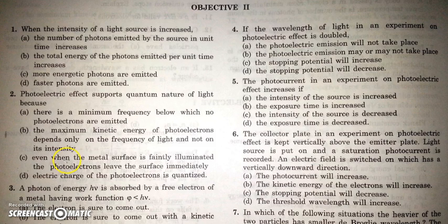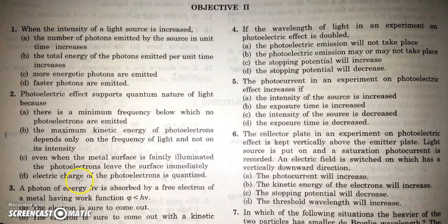The maximum KE depends on the energy of a single photon, which is just a function of frequency, not of intensity. And in option C, even when the metal surface is faintly illuminated, the photoelectrons leave the surface immediately. Yes, this statement is also correct — no matter what the intensity is, there is no time lag between emission of photoelectrons and incidence of light. Option D says the electric charge of photoelectrons is quantized — but the quantization of charge has no relation with photoelectric effect, so option D is not correct. We have three correct options: A, B and C.